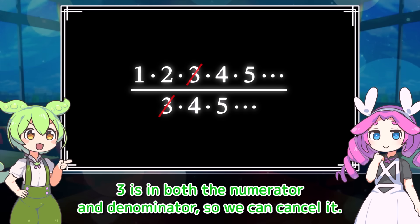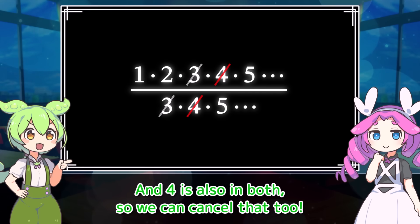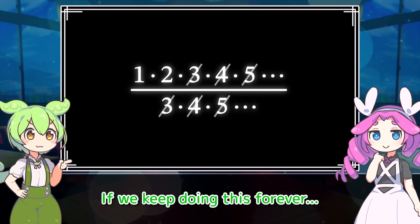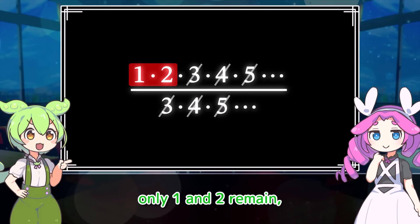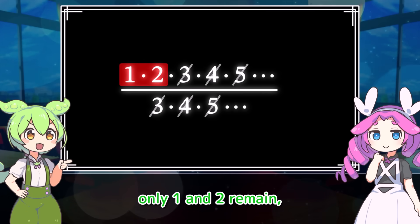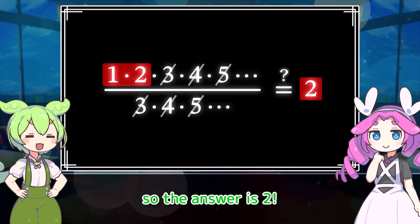3 is in both the numerator and denominator, so we can cancel it. And 4 is also in both, so we can cancel that too. If we keep doing this forever, only 1 and 2 remain, so the answer is 2.